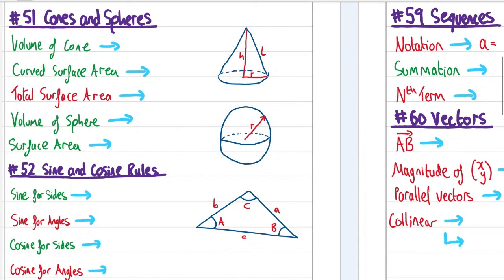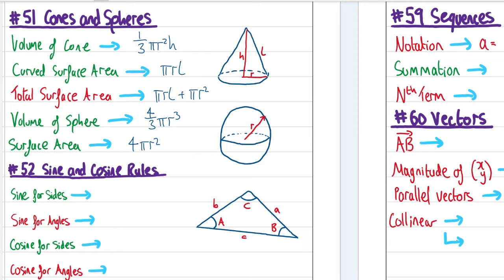Cones and spheres. Volume of a cone (given): ⅓πr²h. Curved surface area (given): πrL, where L is the slant height. Total surface area: πrL + πr² (adding the circular base). Volume of a sphere (given): (4/3)πr³. Surface area of a sphere (given): 4πr².